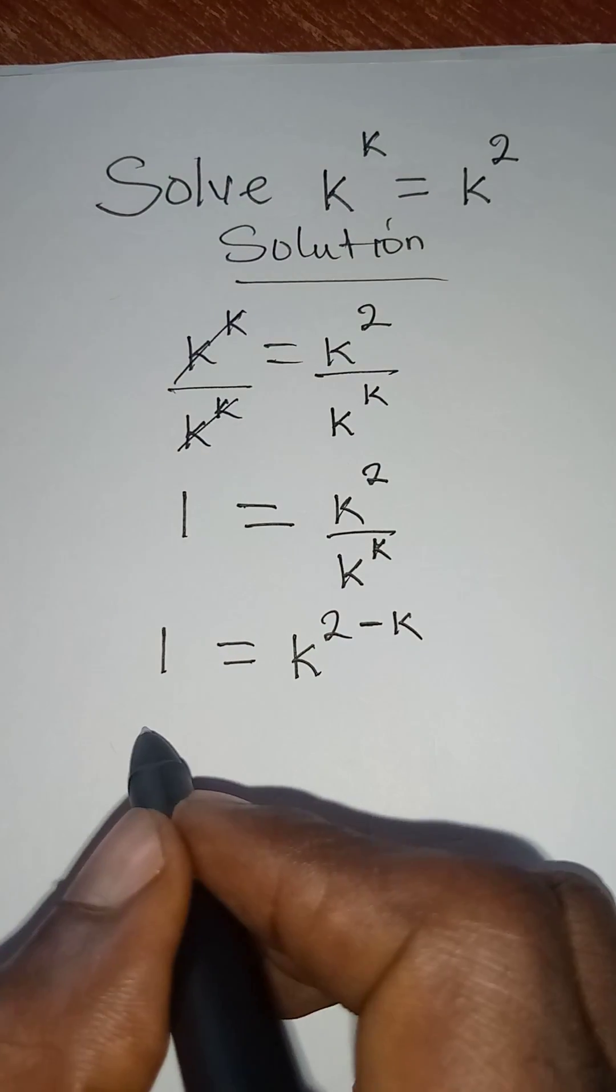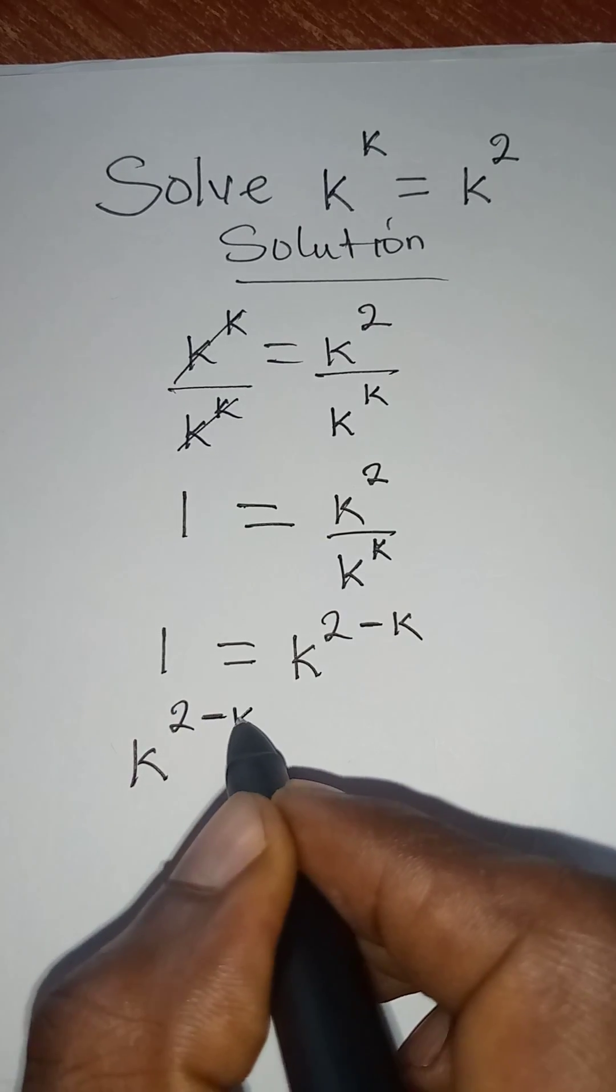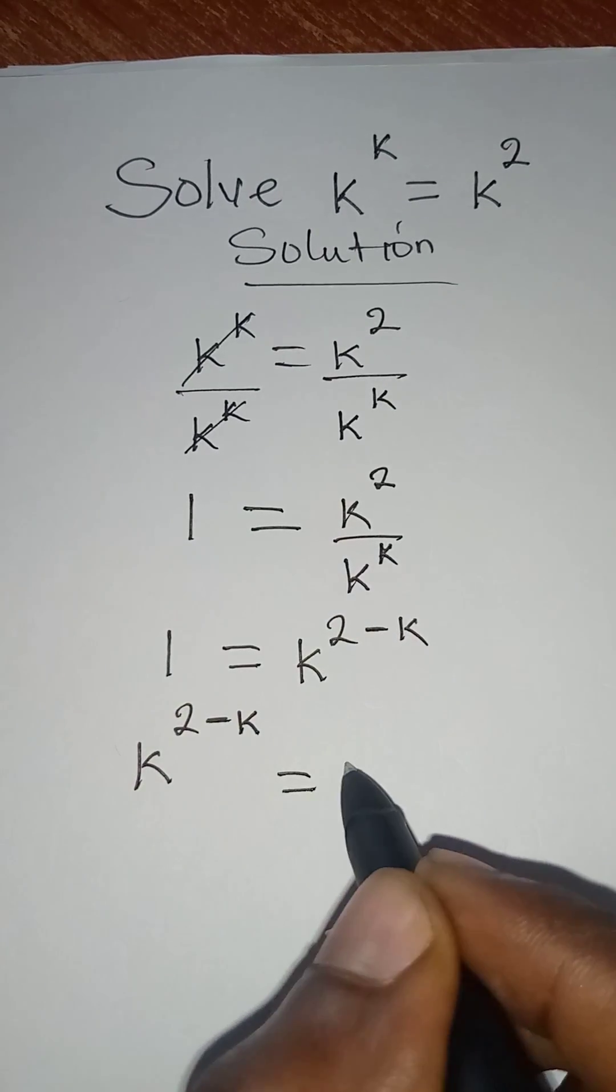I want to rearrange this. So I have k to the power of 2 minus k equal to 1.